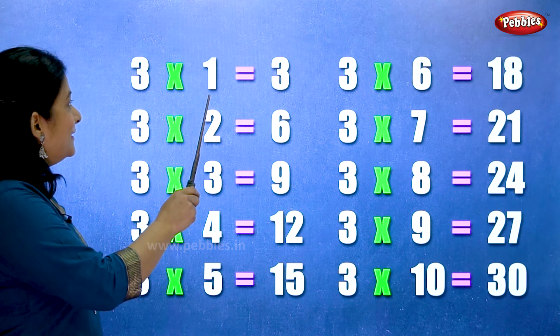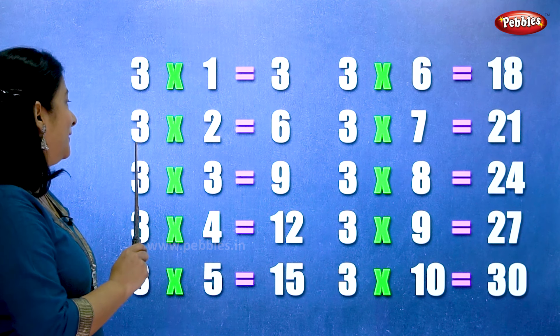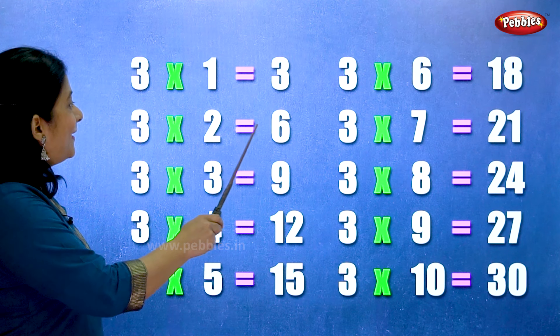Three ones are three. Three twos are six.